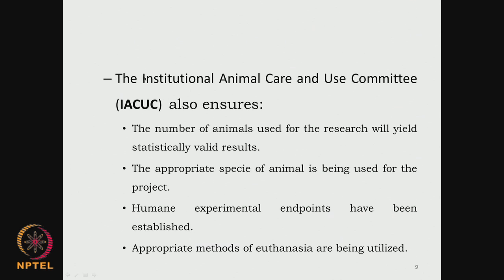There is another committee called the Institutional Animal Care and Use Committee (IACUC). They look at whether the number of animals is enough to yield statistically valid results - they neither want too many animals nor too little animals which are not statistically significant.